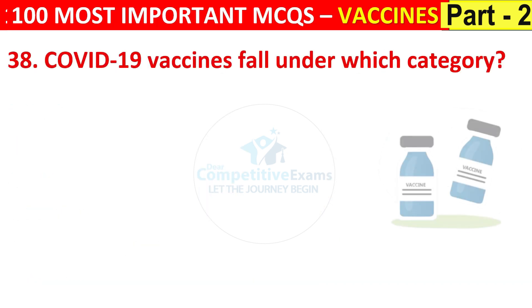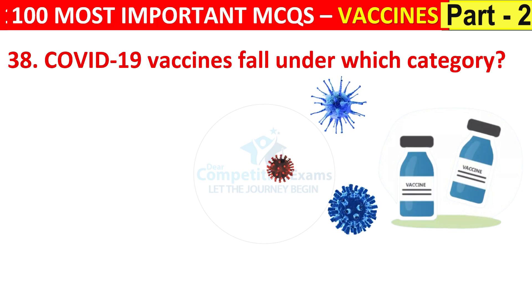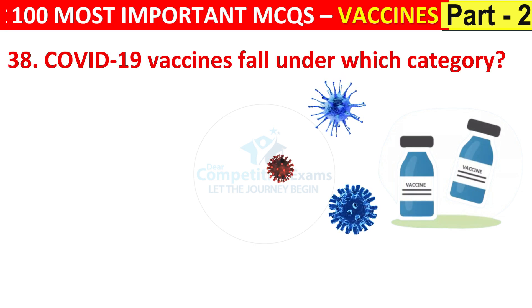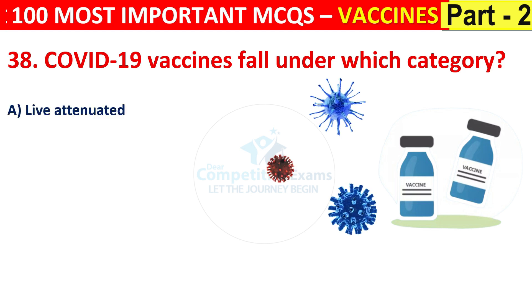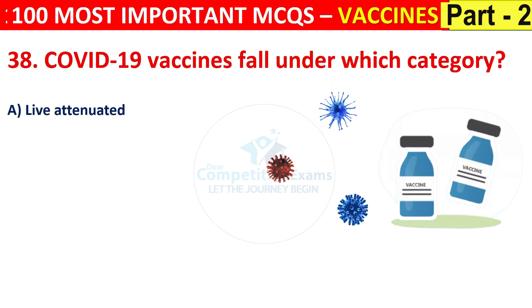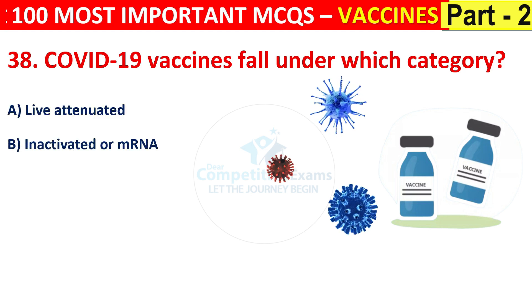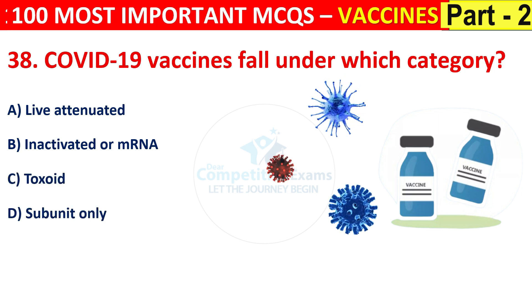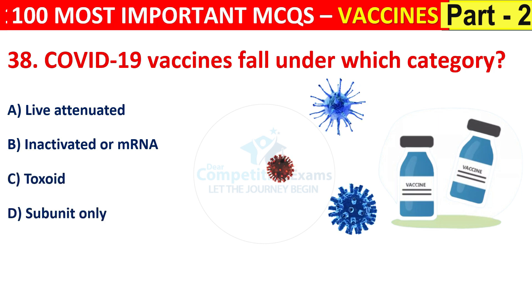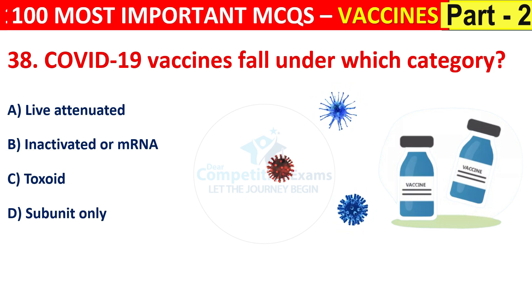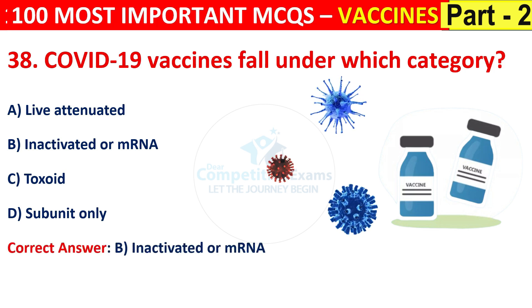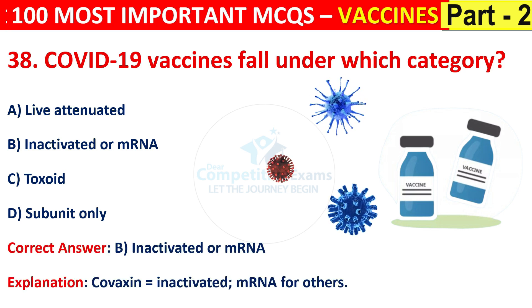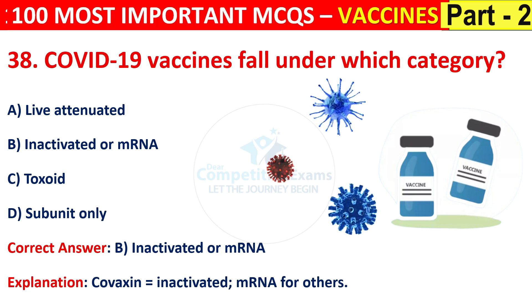Question number 38. COVID-19 vaccines fall under which category? Options are live attenuated, inactivated or mRNA, toxoid, or subunit only. The right answer is B, that is inactivated or mRNA. Covaxin equals inactivated; mRNA for others.